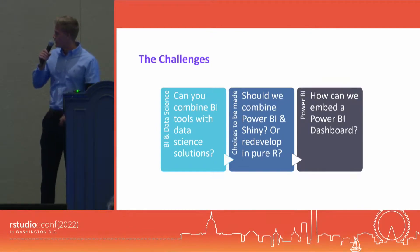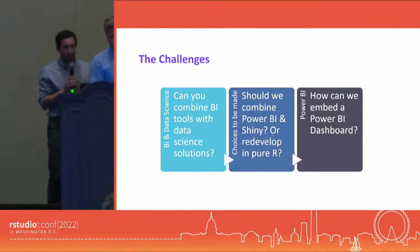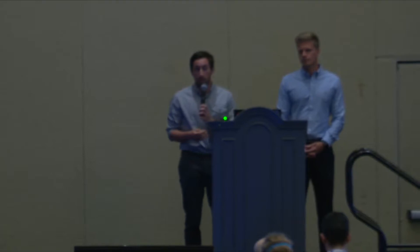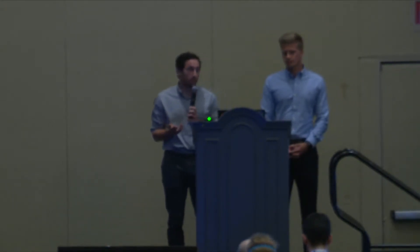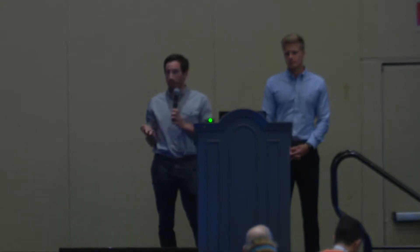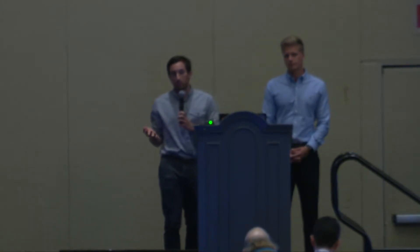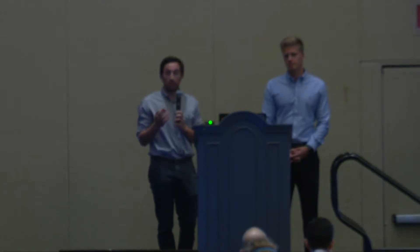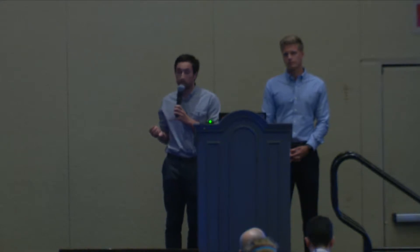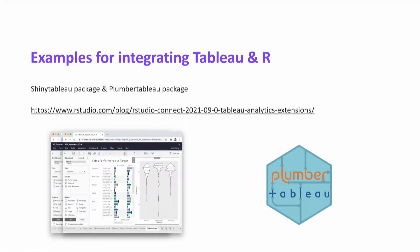When looking at existing integrations between common BI tools and R, there are many options. It's easy to use an R or Python script in data preparation, use custom visuals within BI tools originating from R or Python, or even use a Plumber API to embed a forecast. Integrating R into BI tools is straightforward. The other way around, however, can pose challenges — typically the only way to integrate a BI tool into an R data product is by embedding it. For Tableau, there are two major packages: shiny.tableau and plumber.tableau.